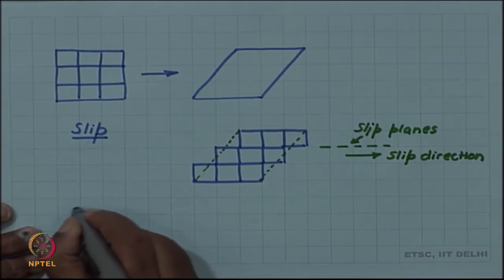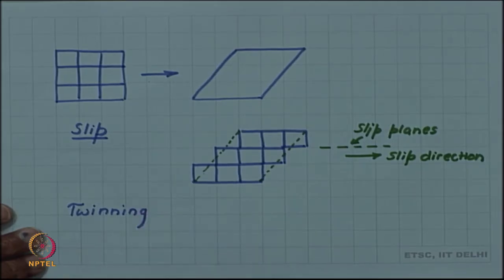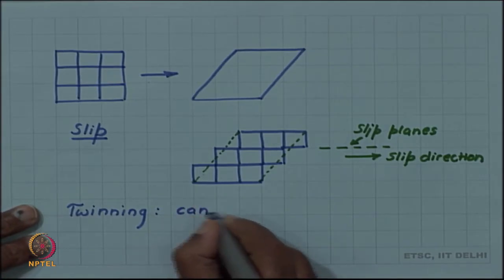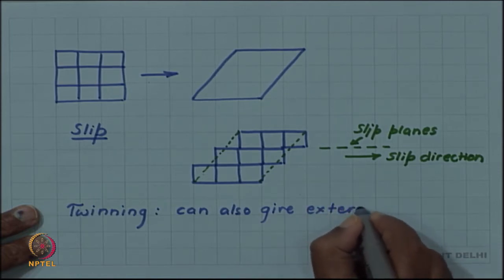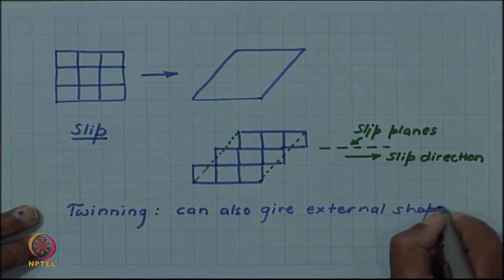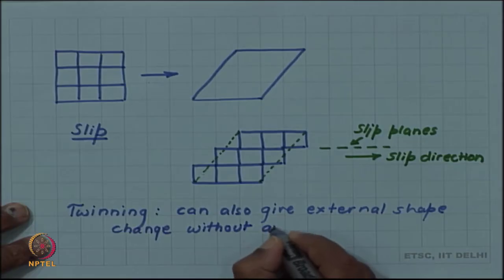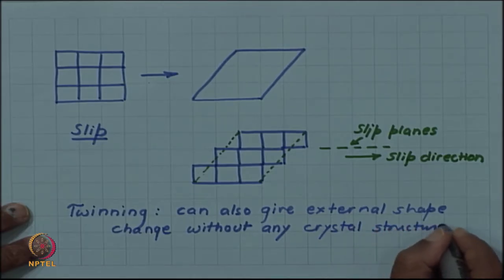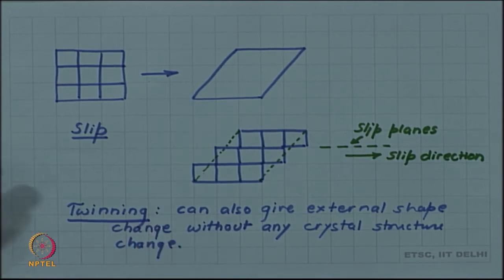There is yet another model — twinning — which we have discussed previously. Twinning can also give external shape change without any crystal structure change. So slip and twinning are two particular deformation mechanisms; both can give external shape change without any crystal structure change.